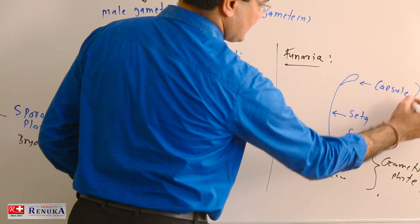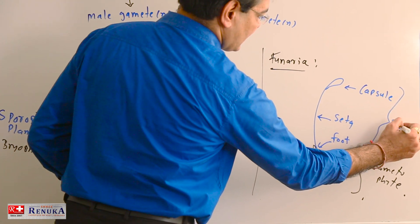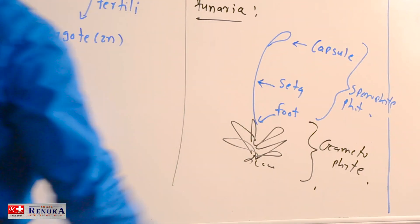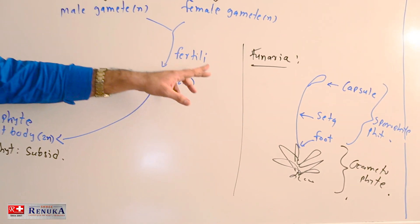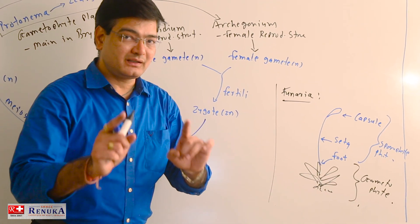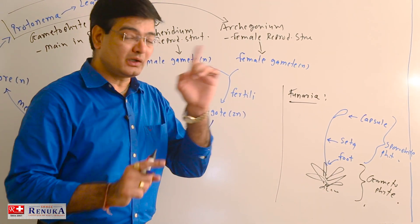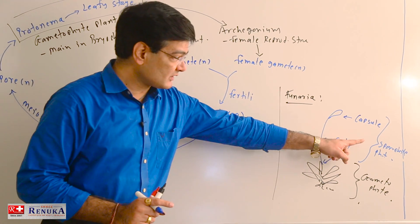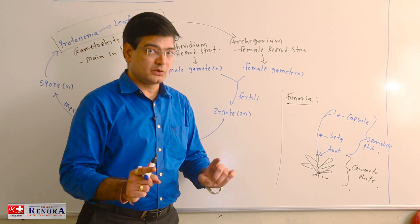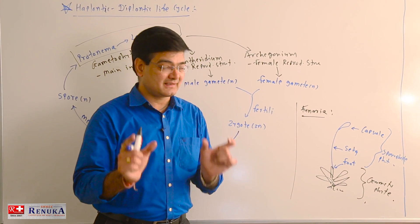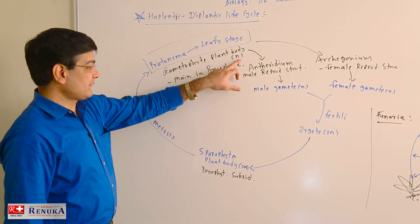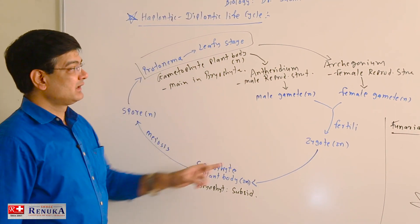From this gametophytic plant body, a new sporophytic plant body develops, consisting of a foot, seta, and capsule — these three structures constitute the sporophyte. So in bryophyta, for example in Funaria, both gametophyte and sporophyte have their separate existence. The sporophyte depends on the gametophyte for food requirements, but both plant bodies have their existence, and that is why it is considered a haplontic-diplontic life cycle.